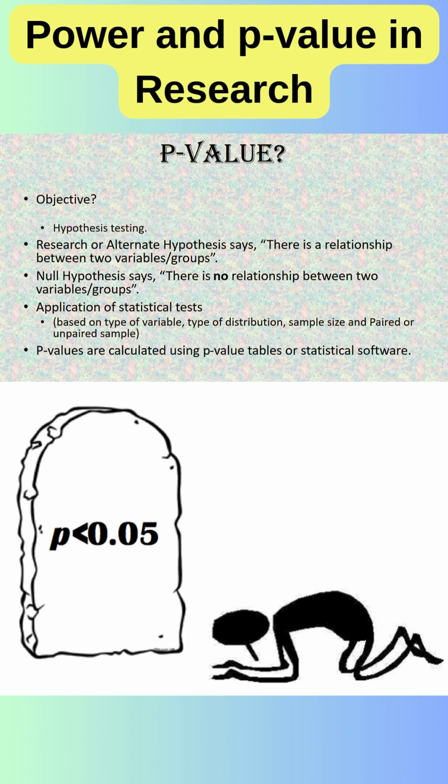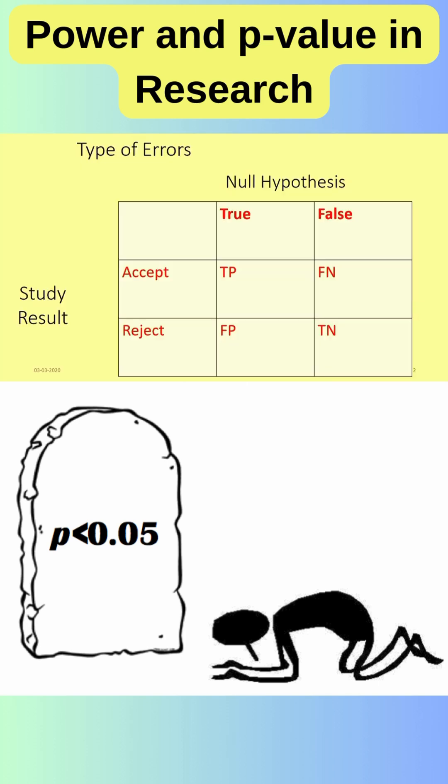After applying the statistical test, we get that p-value. The null hypothesis may be actually true or false. In your study you may accept that null hypothesis or reject that null hypothesis, which will derive four situations.